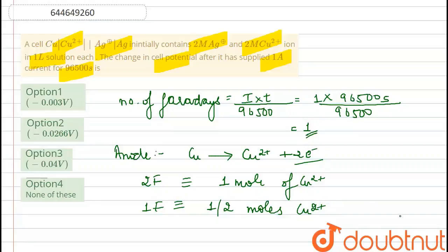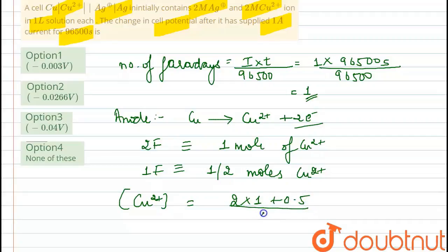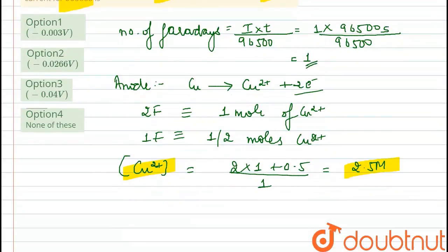So the concentration of Cu²⁺ will be: initial 2 moles plus 0.5 moles produced, divided by 1 liter. The new concentration of Cu²⁺ comes out to be 2.5 molar.